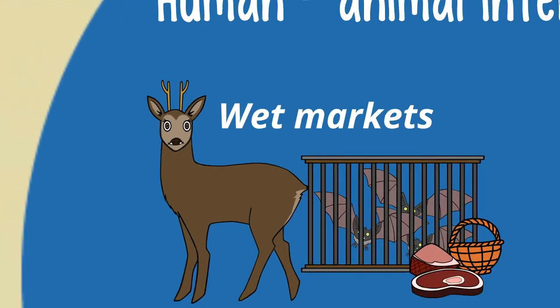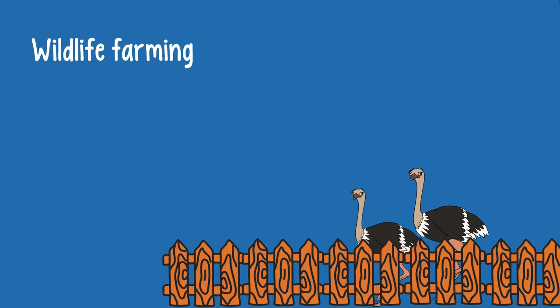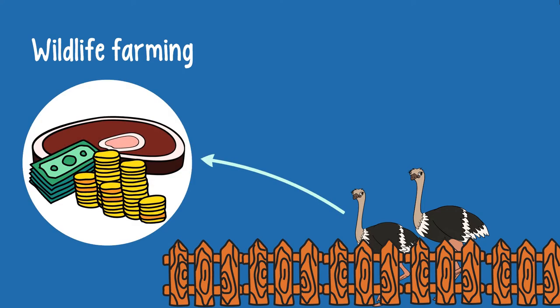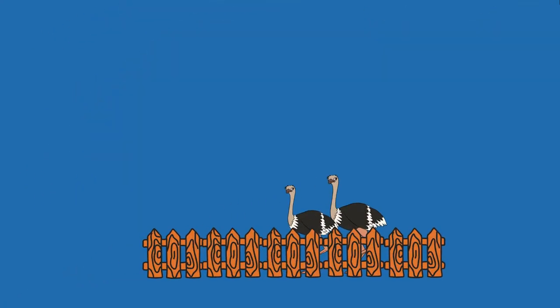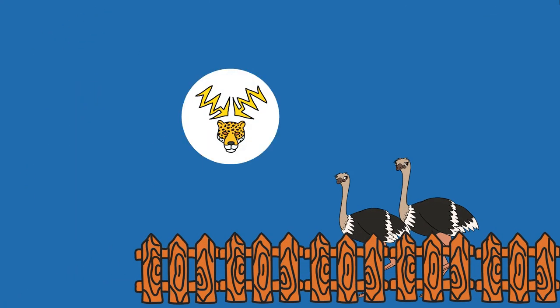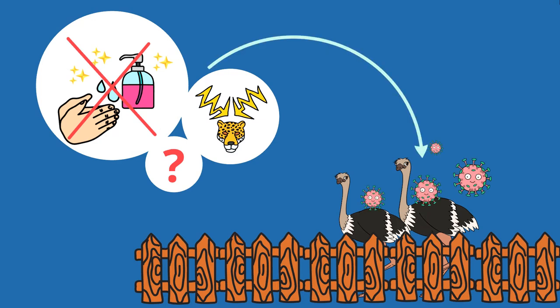Some of the animals offered at wet markets come from wildlife farms. Several wild animals, like deer, rodents, civets, and fur mammals, are bred to provide income and protein worldwide, often without proper quality standards or controls. Stressful living conditions, lack of knowledge about their biology, and bad hygiene makes them vulnerable to all kinds of diseases.